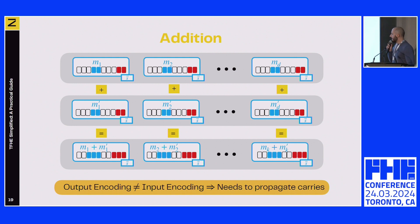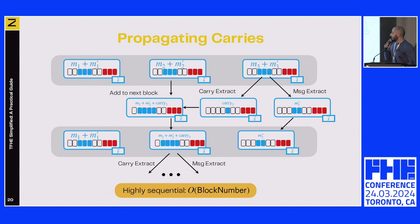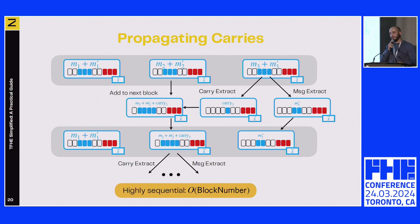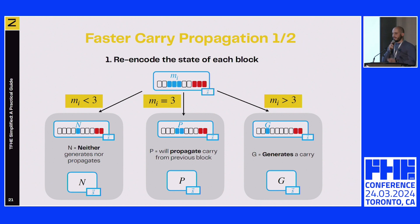To go back to the same encoding, we need to propagate the carries. The classical algorithm takes the carry from the least significant block and propagates it to the next block—extracting message and carry, adding the carry to the next block, and repeating. However, this is a super sequential operation, and with many independent ciphertext blocks we cannot leverage parallelism. Since carry propagation is needed frequently, this is costly. The idea is to leverage parallelism with a faster carry propagation method.